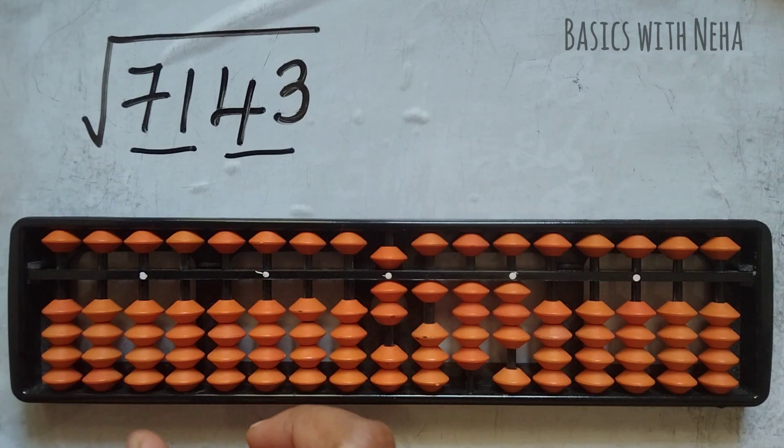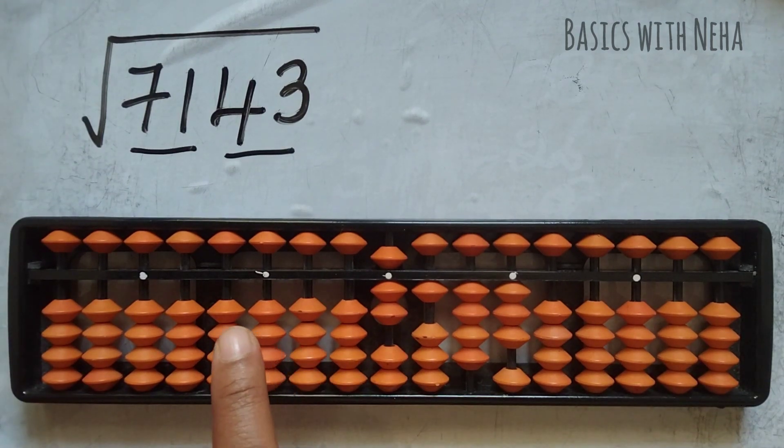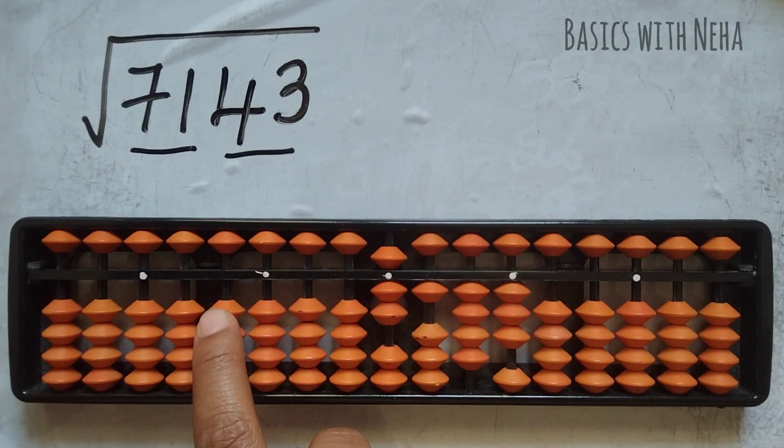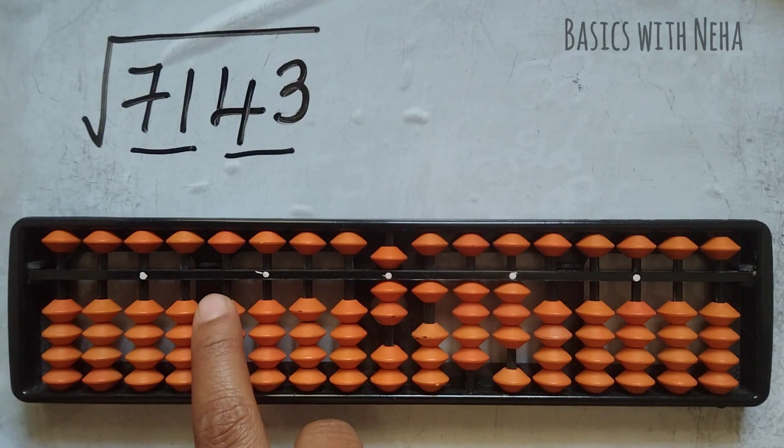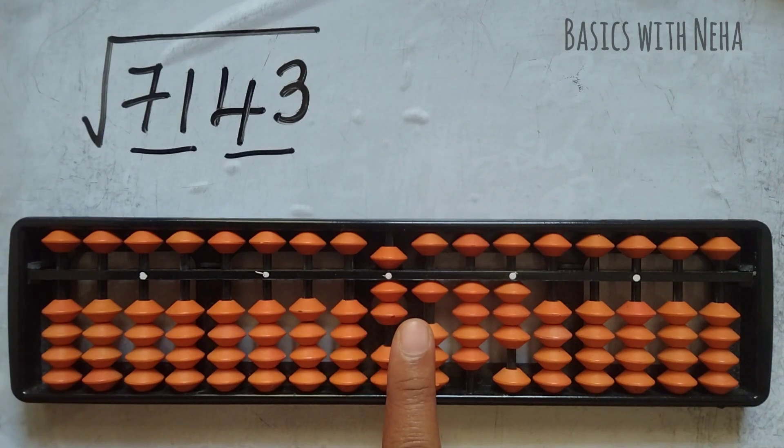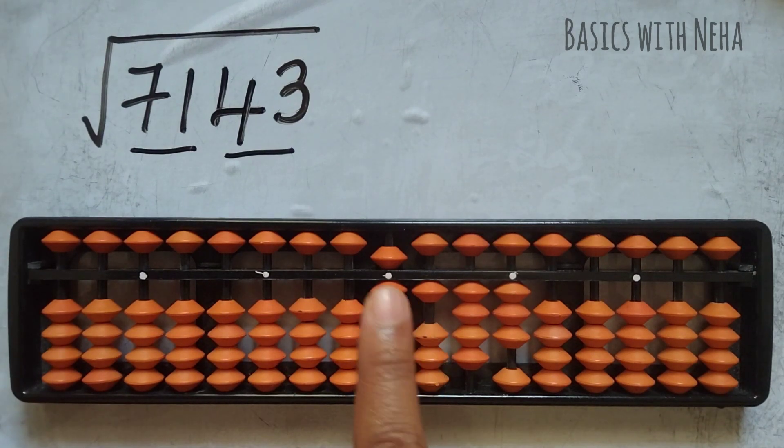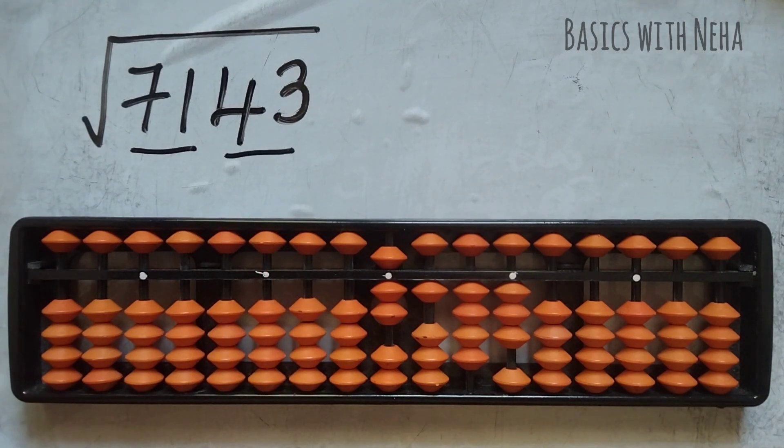I'm using the first group completely. So my answer will be here on the second rod from the house pointer. My answer will be here because I'm using the first group completely. And I know the number of groups will tell me how many digits answer we'll get. So here there are two groups, we'll get two digit answers. So my answer will start from here.